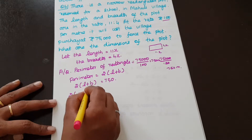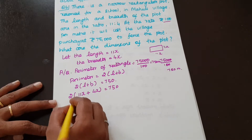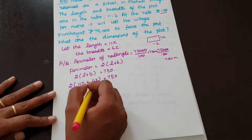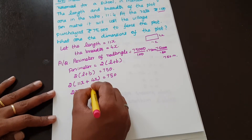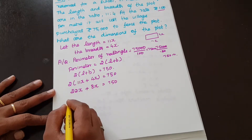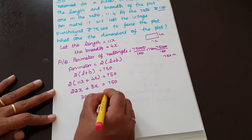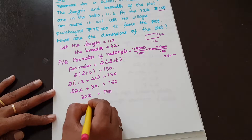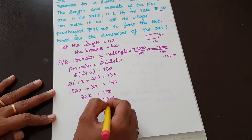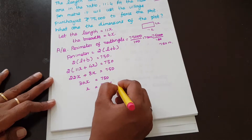Expanding: 2 × 11X = 22X and 2 × 4X = 8X. So 22X + 8X = 30X. Therefore 30X = 750, and X = 750 ÷ 30 = 25.